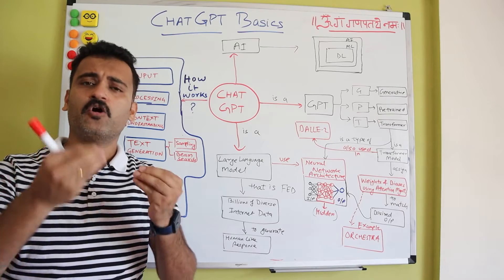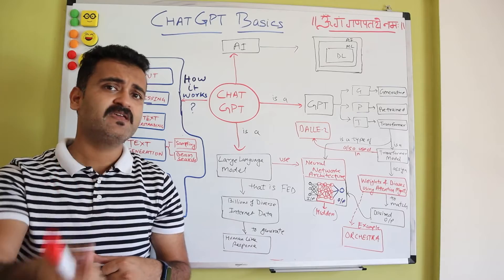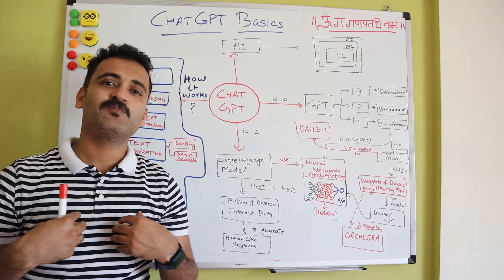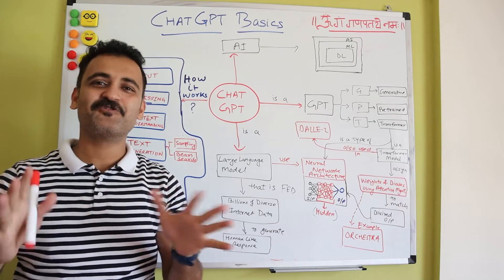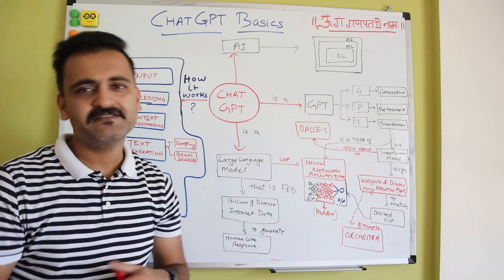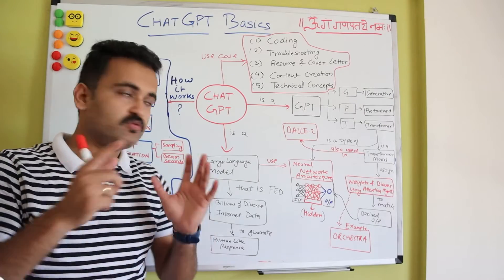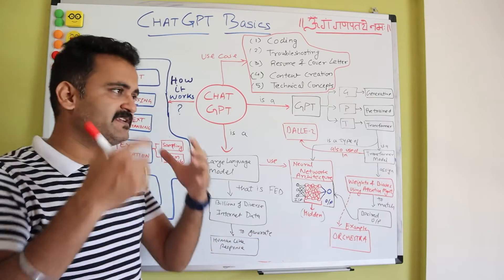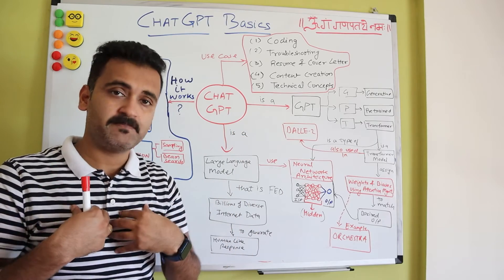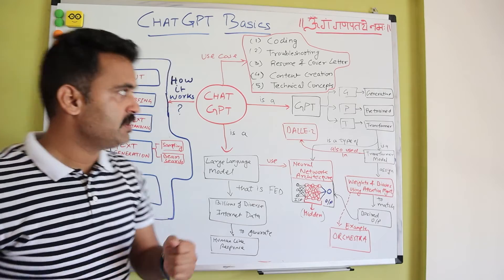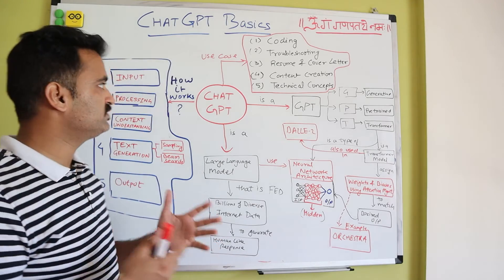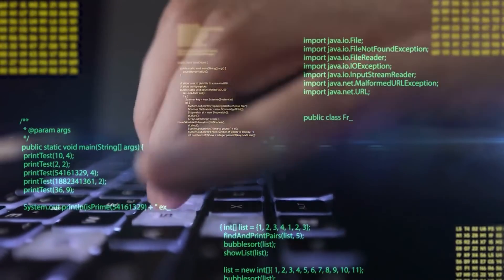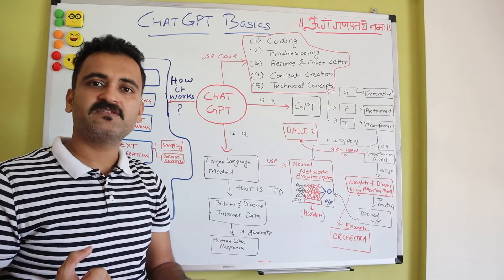Now let's understand where we can use ChatGPT in real life. I'll give some scenarios — there are countless possibilities, and the same things could also be done with Bard, which I call ChatGPT's brother from another mother. Although the two are competing, they have similar functionalities. I've distilled the use cases into five which have helped me personally and are most relevant to people working in IT. The first and very useful use case is coding — people with a coding background can get code snippets and modify them.